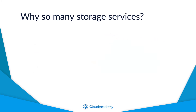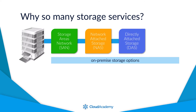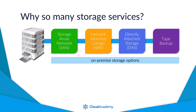So why does AWS provide so many different storage services if all you need to do is store your data in the cloud? Well, it's effectively the same reasons why you have a range of storage products and solutions in your own on-premise environment. For example, you are likely using different storage devices, such as a storage area network known as a SAN, network attached storage known as a NAS, directly attached storage and also tape backup to name but a few. The point is that they all perform the same function: the ability to store data.